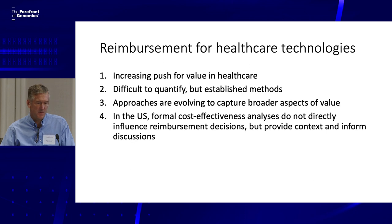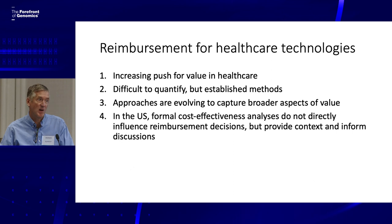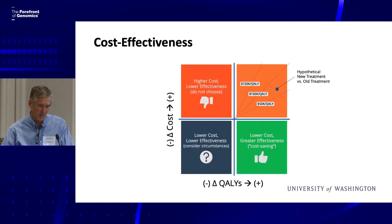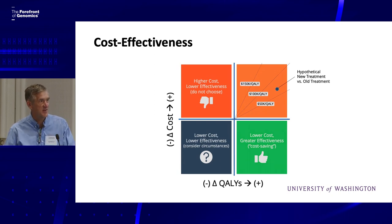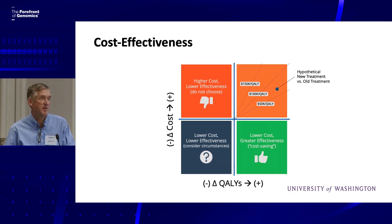Mark covered some of these key points about costs in healthcare and value and why people are increasingly interested in it. There are formal methods — cost-effectiveness analysis — that have been developed and used over the past 30 to 40 years, and you're seeing increased use of these formal methods across the world and increasingly in the United States. The classic cost-effectiveness plane shows costs going up or down and outcomes improving or not. Most things in the US land in the upper right quadrant — they cost more and they improve outcomes — and that's where you want to ask: what am I getting for my money spent?